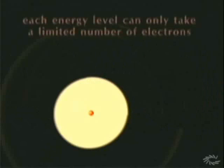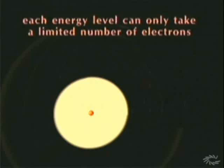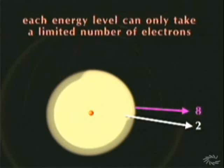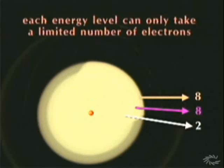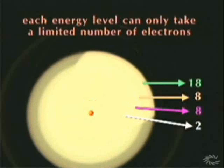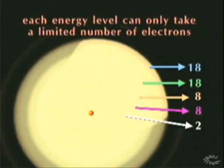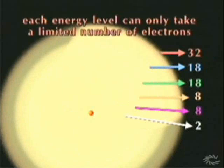Each energy level can only take a limited number of electrons. The first energy level can take two electrons. The second and third can each take eight. The fourth and fifth can take 18. And the sixth can take 32.